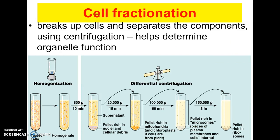The other technique is cell fractionation. You basically take cells and put them in something very much like a blender, chop them up so all the cell parts spill out — obviously the cells are dead now — and then spin them in a centrifuge. When it spins, all the heavy stuff sinks to the bottom. The heaviest cell part is the nucleus, so after a few minutes you can pull out just the nuclei and study them. Pour off the liquid — the supernatant — then spin again. The next heaviest part, mitochondria, sinks to the bottom. You can break cells into individual components and study each cell part one at a time.